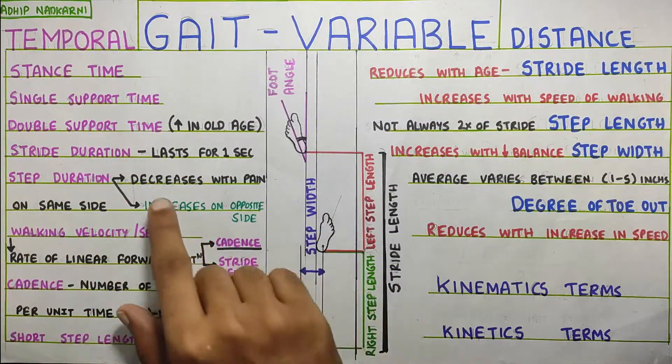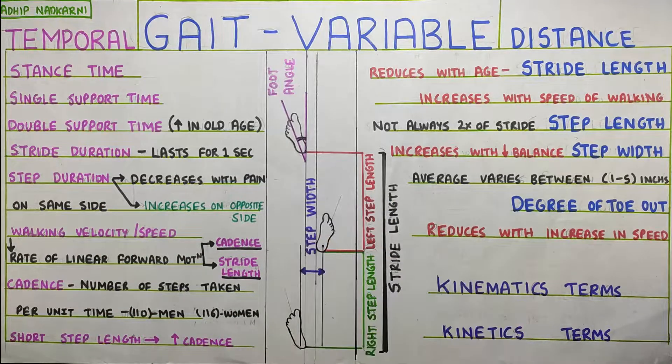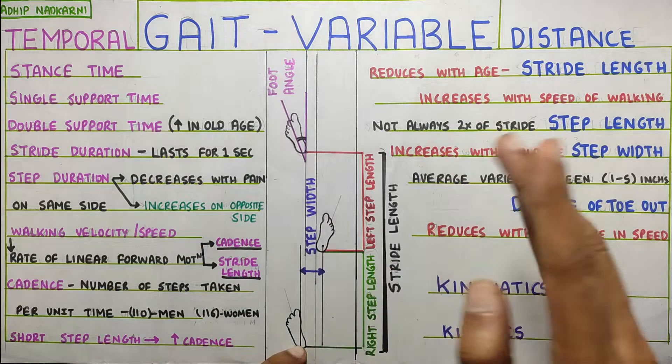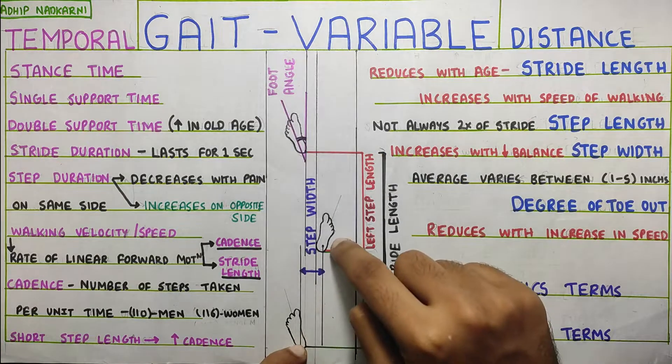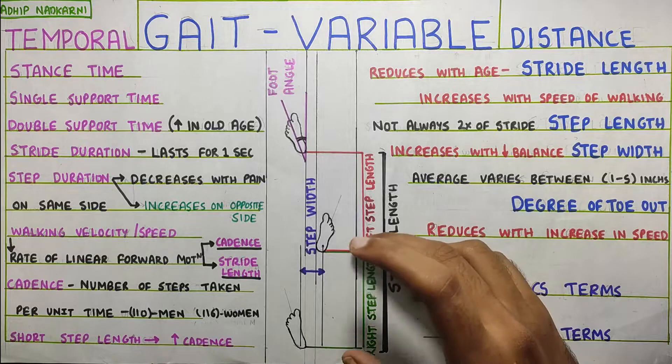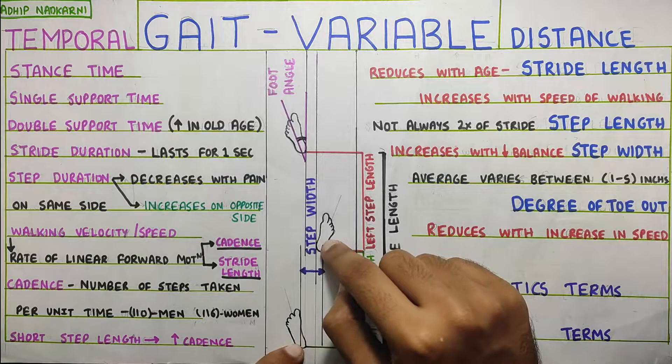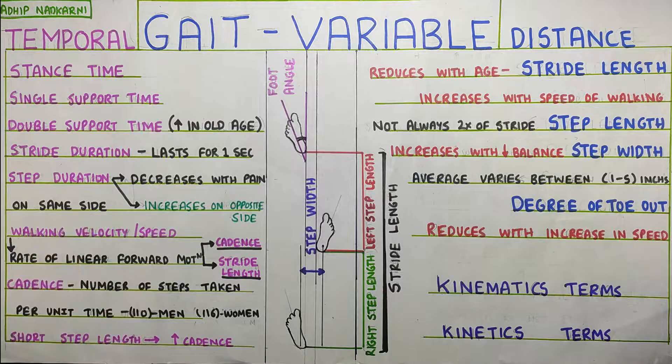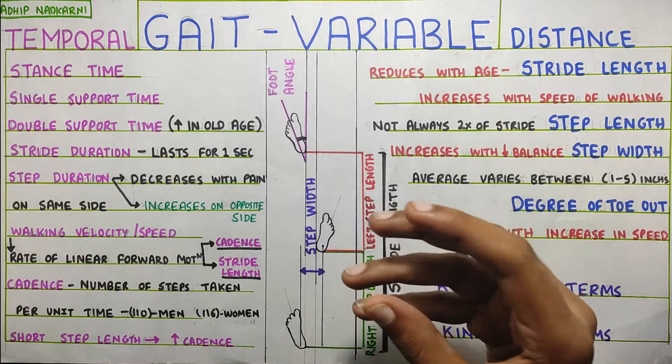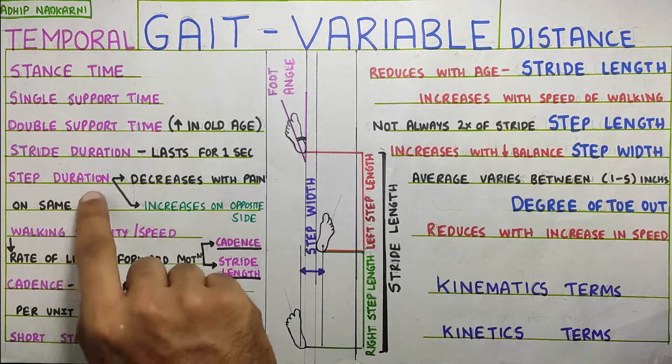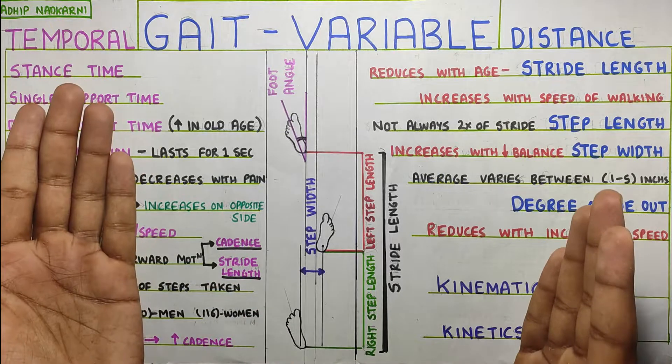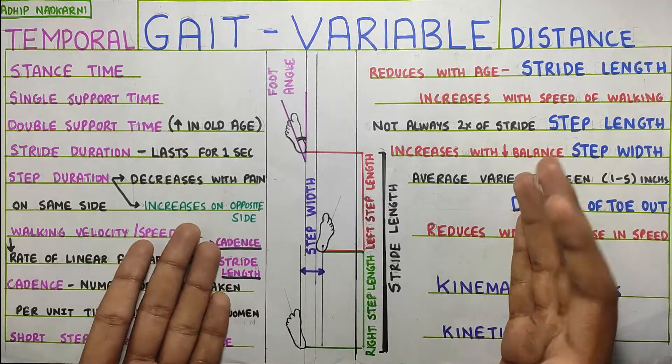Next is the step duration. Now, that is the time that you spend to take one step. So, now over here, if you can see, this is the one step length. That is from heel strike of one foot to the heel strike of the other foot. Stride was of the same foot, step was of the other foot. So, basically the time that you are spending from one heel strike to the another heel strike will be the step duration. This will decrease with pain on the same side, meaning because of pain, you will less weight bear on the same side of the pain. So, that's why your step duration will decrease with pain on the same side and then it will increase on the opposite side because you are spending less time on one side. Obviously, you will have to spend more time on the other side comparatively and that's how step duration matters.